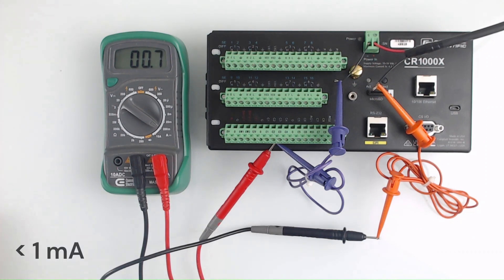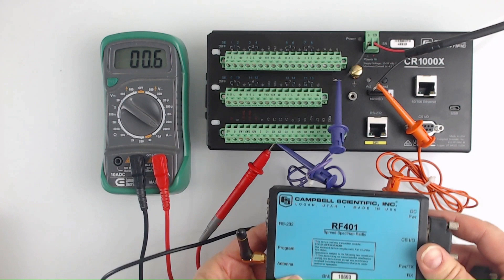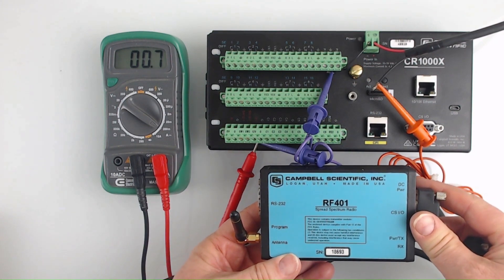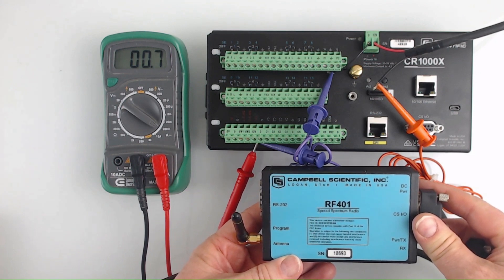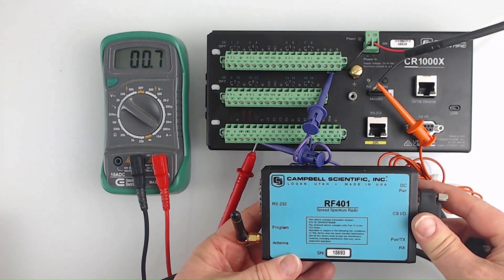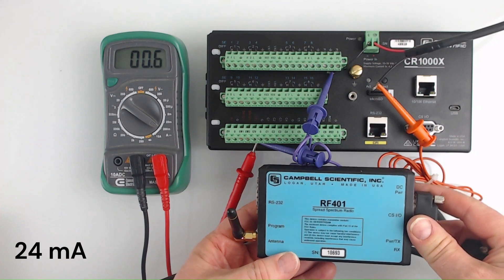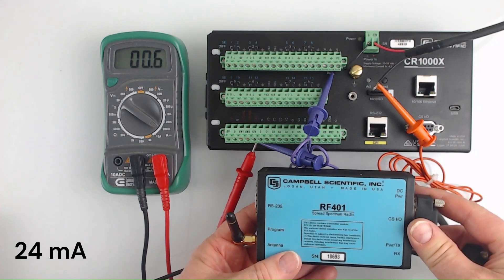This is an RF 400 radio that has been configured to be continuously powered. According to the radio specifications, its average power drain should be about 24 milliamps when it's always on.